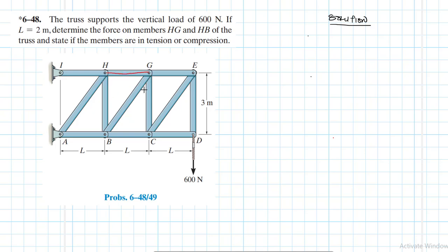For finding HB, one solution would be to section the member here — we have the left-hand side and the right-hand side. Which section would you use? I would use the right-hand section and take moments about point B.